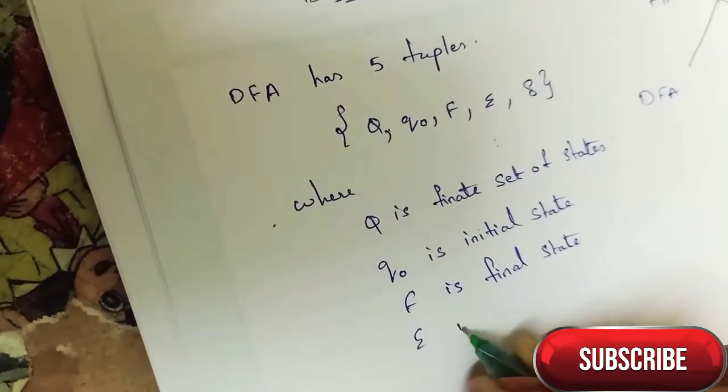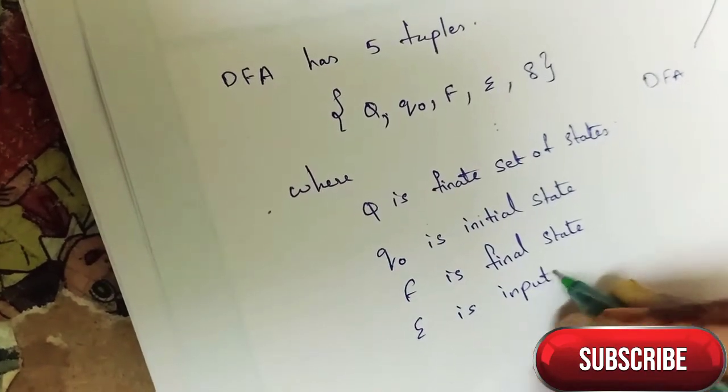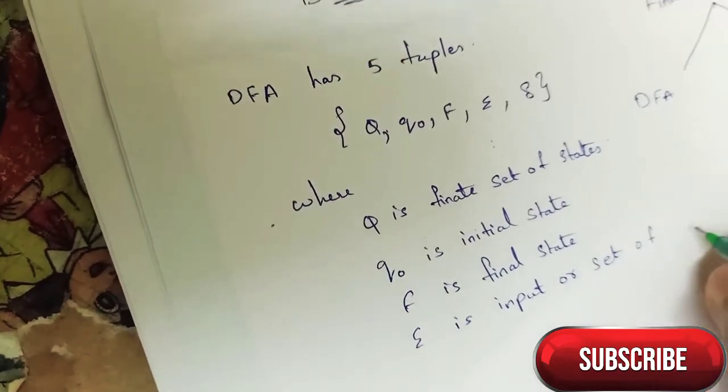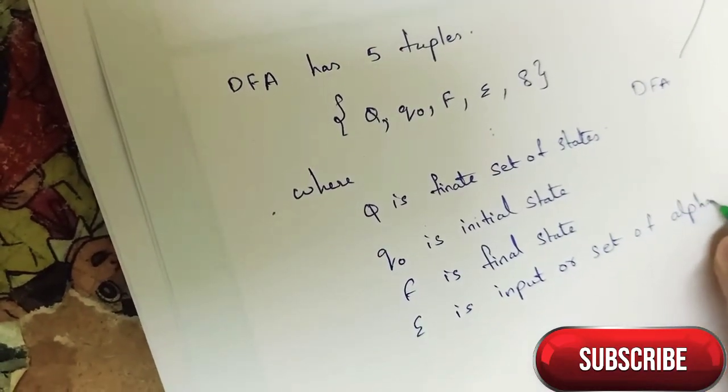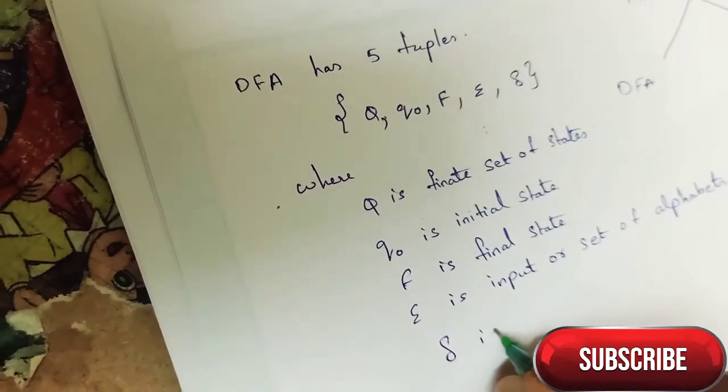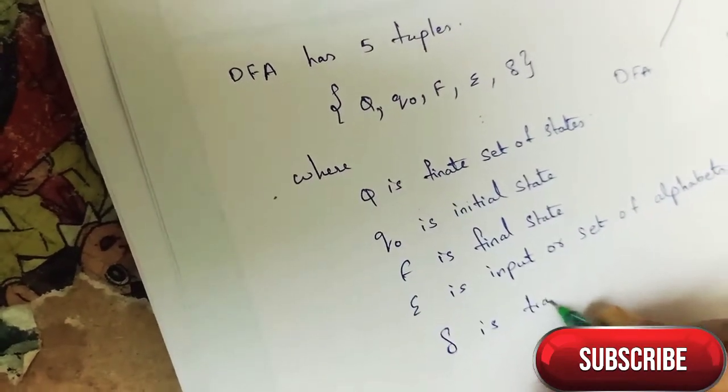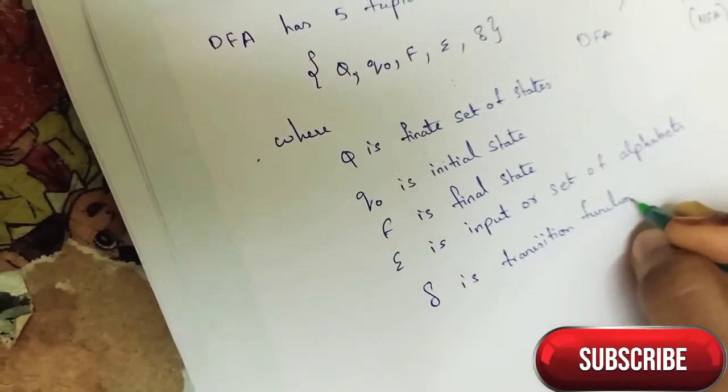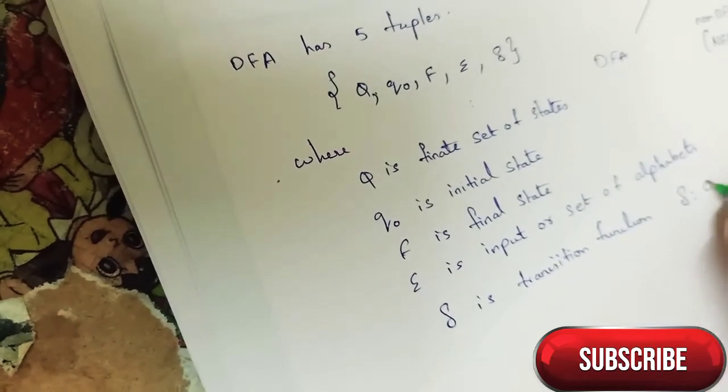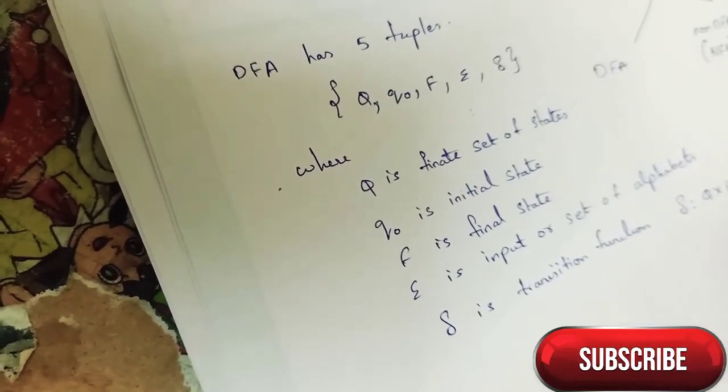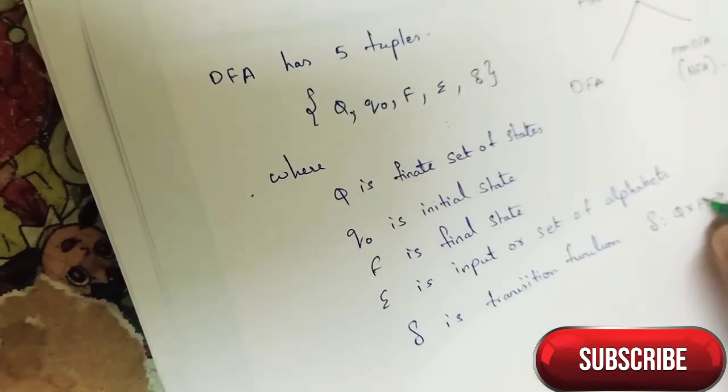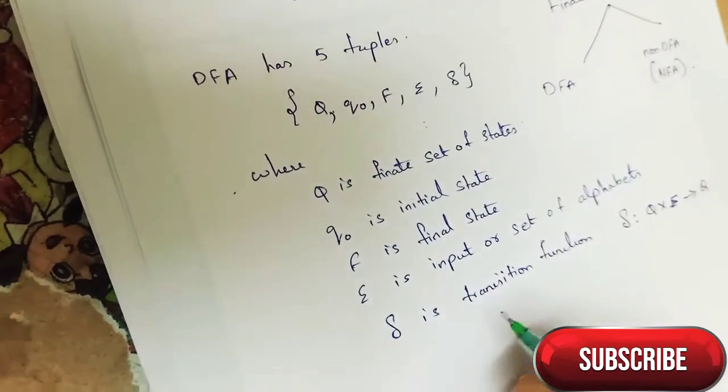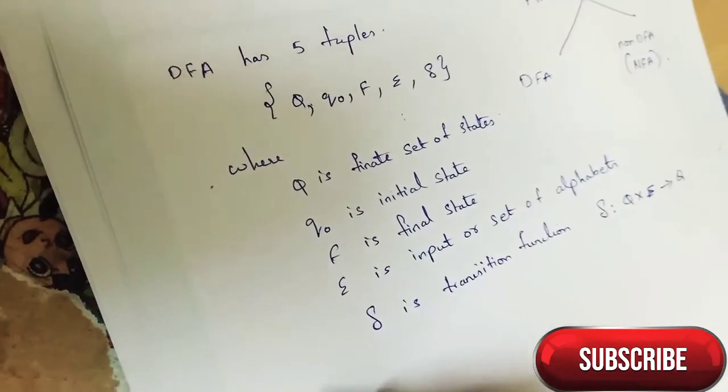Epsilon is inputs or set of alphabets. Delta is transition function, where delta maps from Q into epsilon, giving rise to Q, the finite set of states.